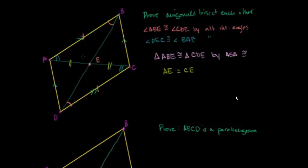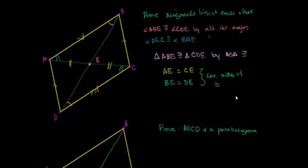Now by the same logic, BE must be equal to DE — they are corresponding sides of two congruent triangles, so they must have the same length. So BE equals DE. We've done our proof. Diagonal DB is splitting AC into two equal segments, and AC is splitting DB into two equal segments of equal length.